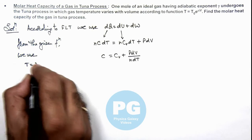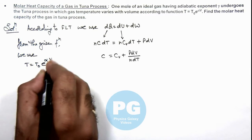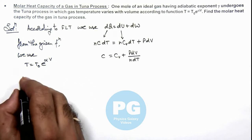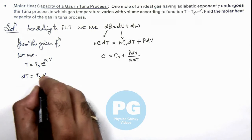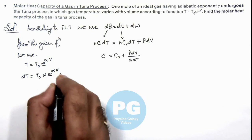T = T₀e^(αV). Then we can differentiate; this gives dT = T₀α·e^(αV)·dV.